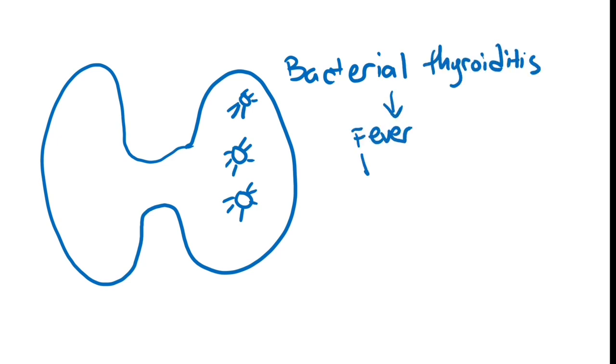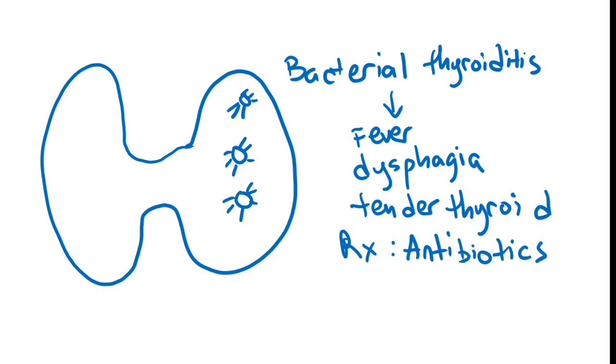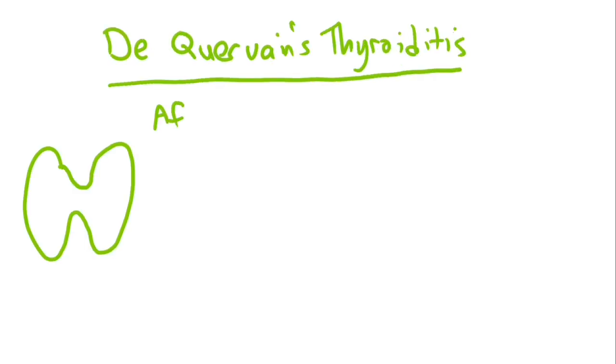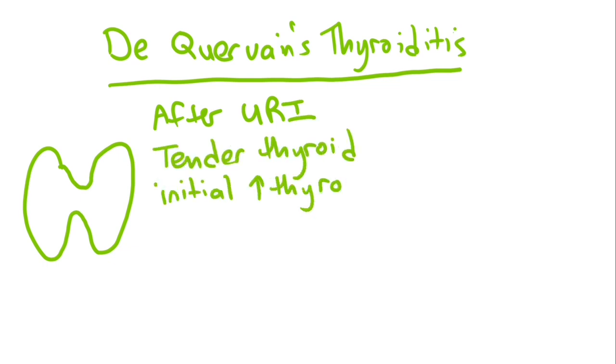Bacterial thyroiditis can occur after upper respiratory infection and can cause fever, dysphagia, tender thyroid with normal thyroid function tests. This is treated with antibiotics. De Quervain's thyroiditis tends to occur after viral upper respiratory infection. This can lead to a tender thyroid with initial hyperthyroid phase followed by hypothyroid with elevated ESR. Treat it with steroids.